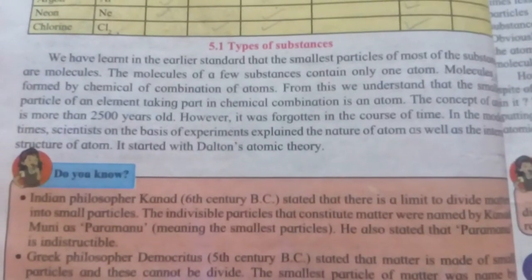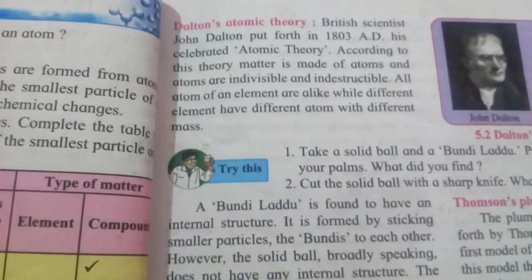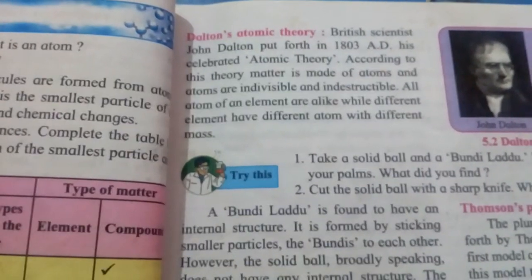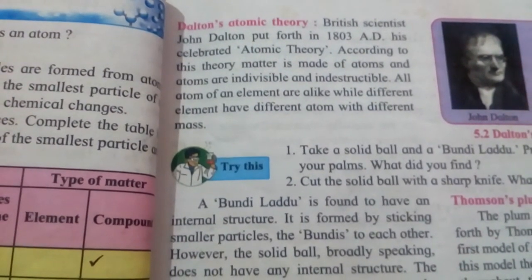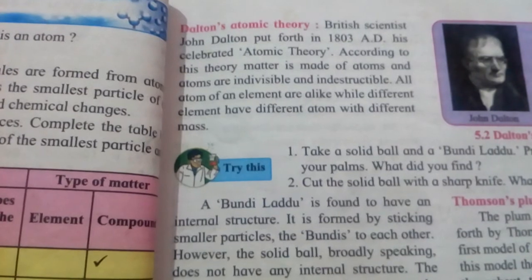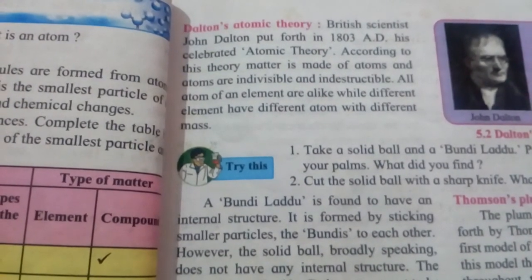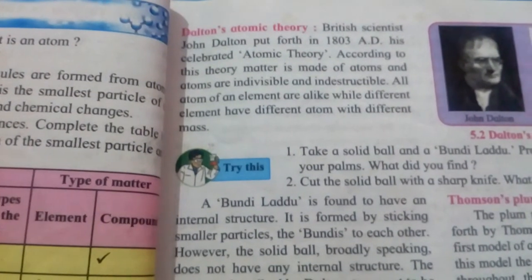There is one theory — Dalton's Atomic Theory — which states that the atom is the smallest indivisible particle of an element. It cannot be created nor destroyed. The atoms of the same element are going to be similar, while the atoms of different elements are going to be different.